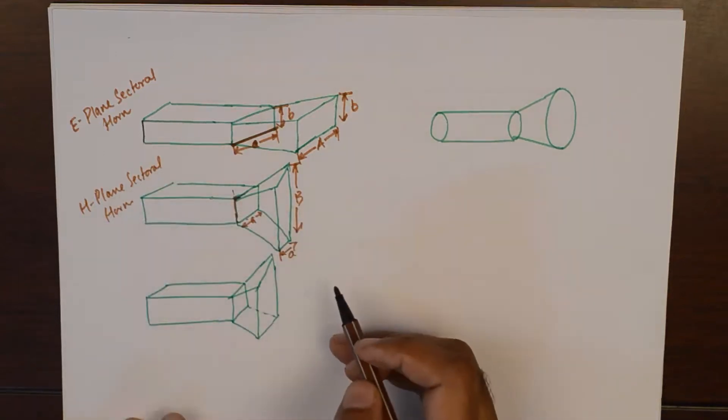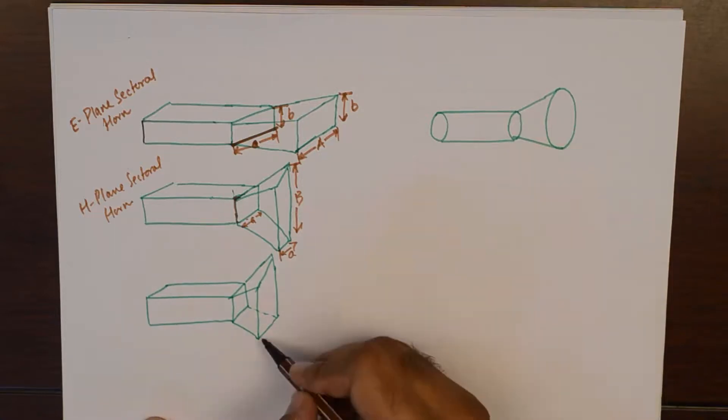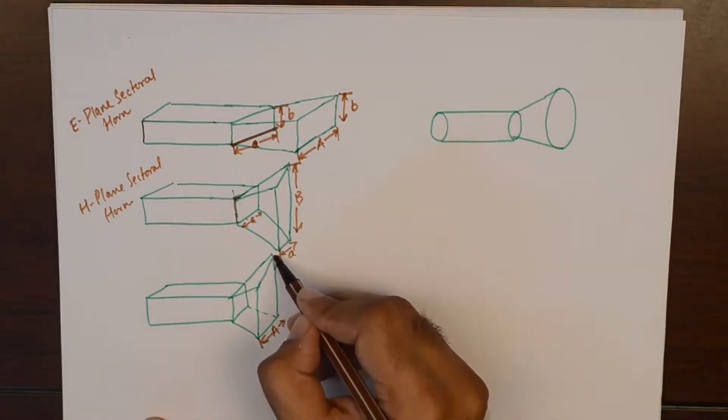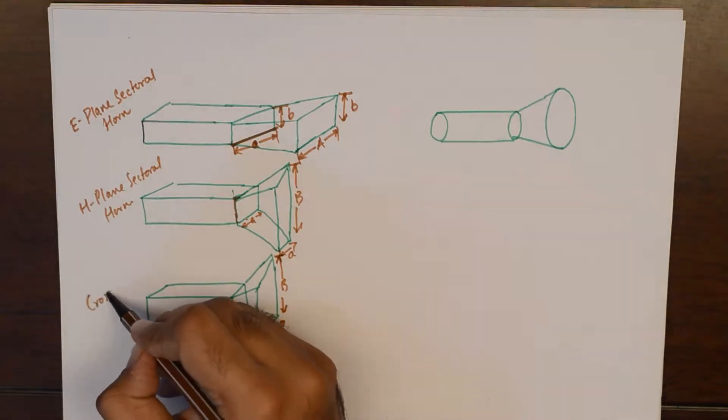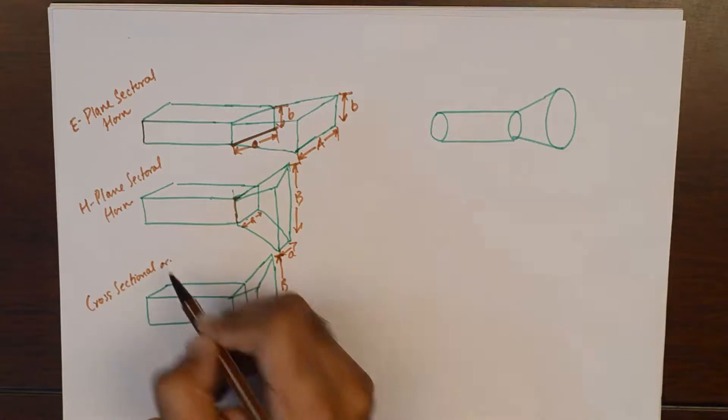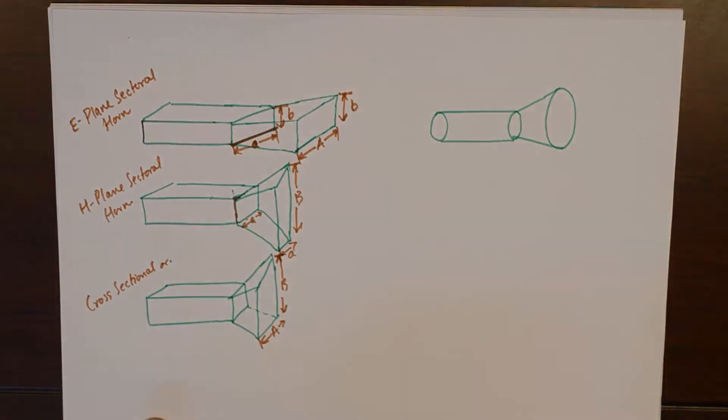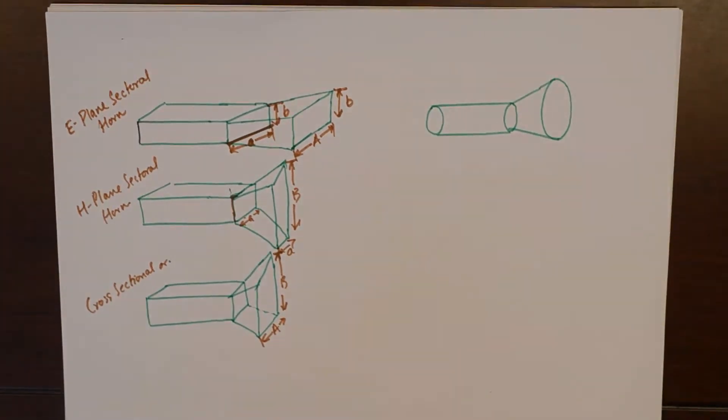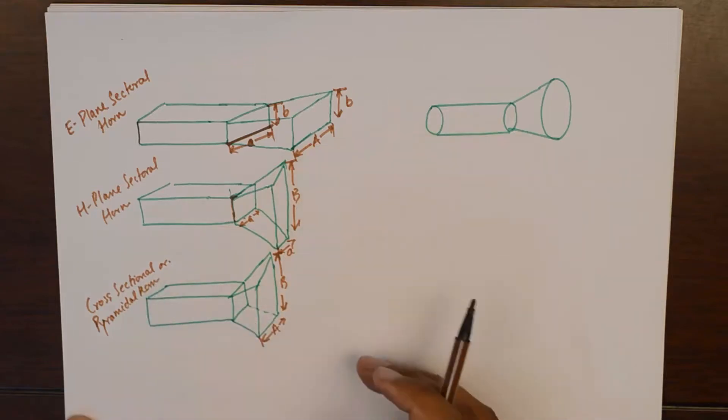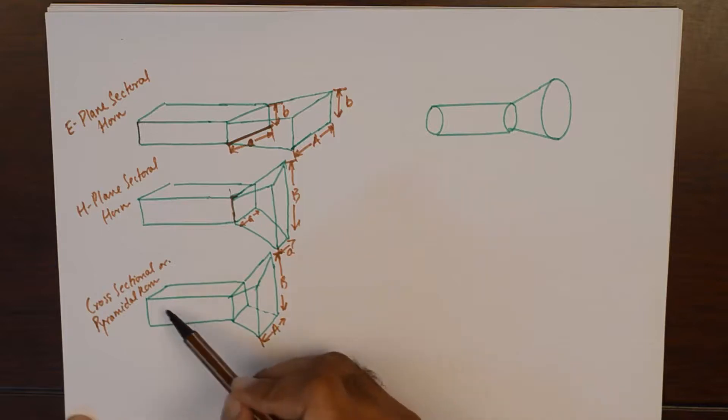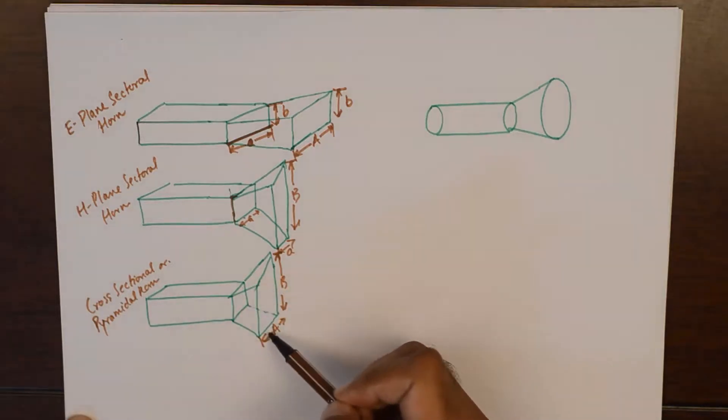But, the most popular is the one which increases flaring length in both directions A and B which results in cross sectional. So, in most cases we are going to be dealing with this type of horn antenna where both A and B are flared. Our normal waveguide is increased in dimension in both A and B.